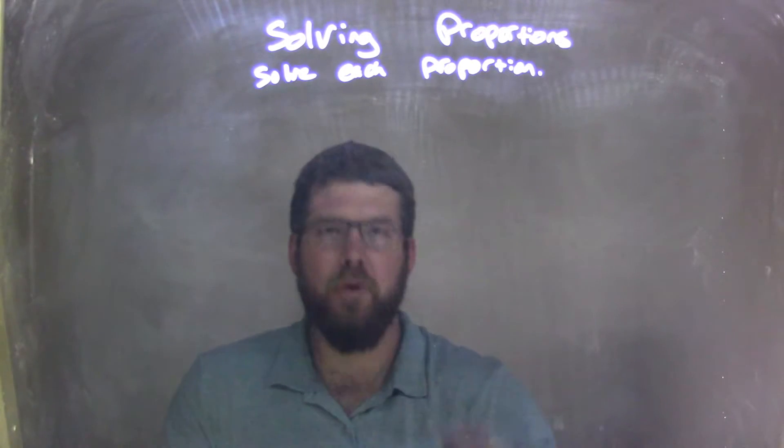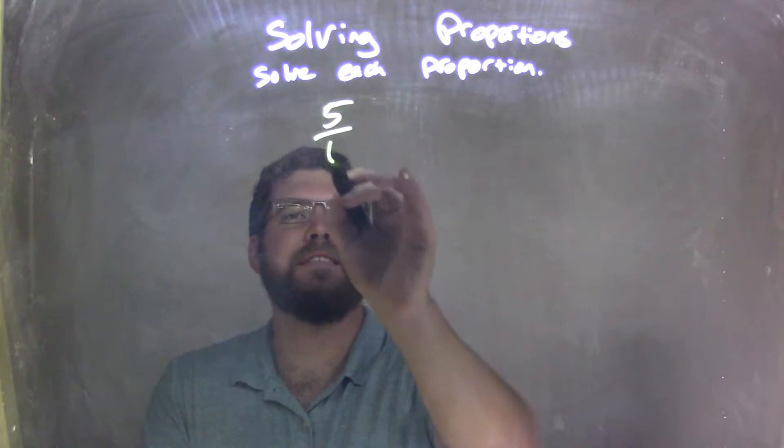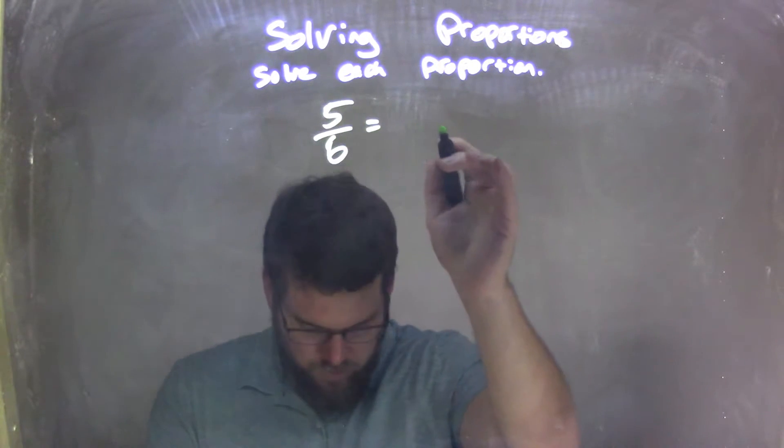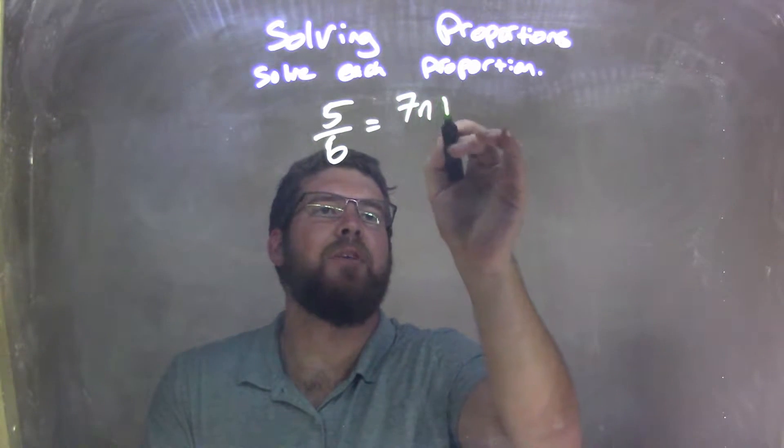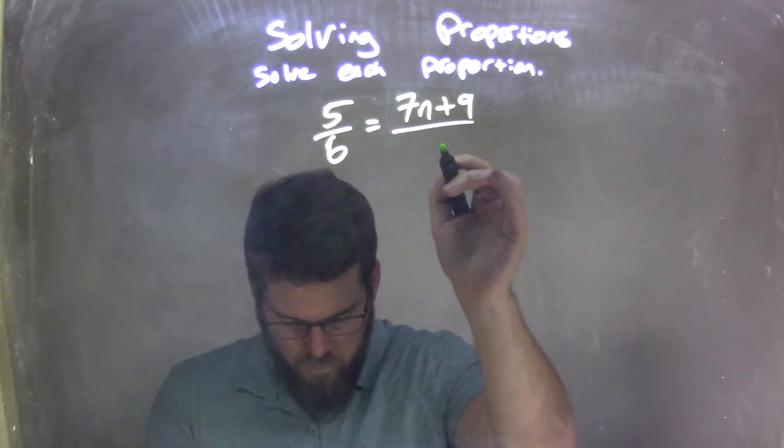So if I was given this proportion, 5 over 6 equals 7n plus 9 over 9